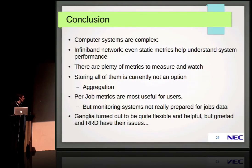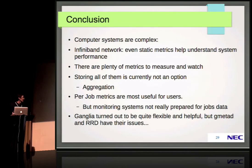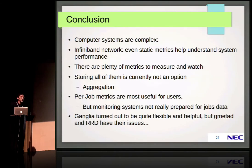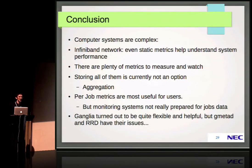In conclusion: for the InfiniBand network topic, even static metrics help understand system performance. For the second part, there are too many metrics to afford storing them all, so you need some sort of aggregation — I proposed a way of aggregating which is not new, but we find it very helpful. We use the Ganglia infrastructure to aggregate all of this; it turned out to be quite flexible and helpful, but GmetaD and the RRD database have their issues. Thank you very much.